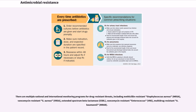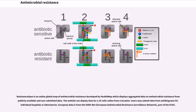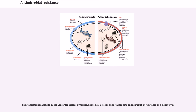There are multiple national and international monitoring programs for drug-resistant threats, including Methicillin-resistant Staphylococcus aureus, MRSA, Vancomycin-resistant S. aureus, VRSA, Extended-Spectrum Beta-Lactamase, ESBL, Vancomycin-resistant Enterococcus, VRE, and Multidrug-resistant A. baumannii, MRAB. Resistance Open is an online global map of antimicrobial resistance developed by HealthMap, which displays aggregated data from publicly available and user-submitted data. The website can display data for a 25-mile radius from a location. European data is from the EARSnet, European Antimicrobial Resistance Surveillance Network, part of the ECDC. Resistance Map is a website by the Center for Disease Dynamics, Economics and Policy and provides data on antimicrobial resistance on a global level.